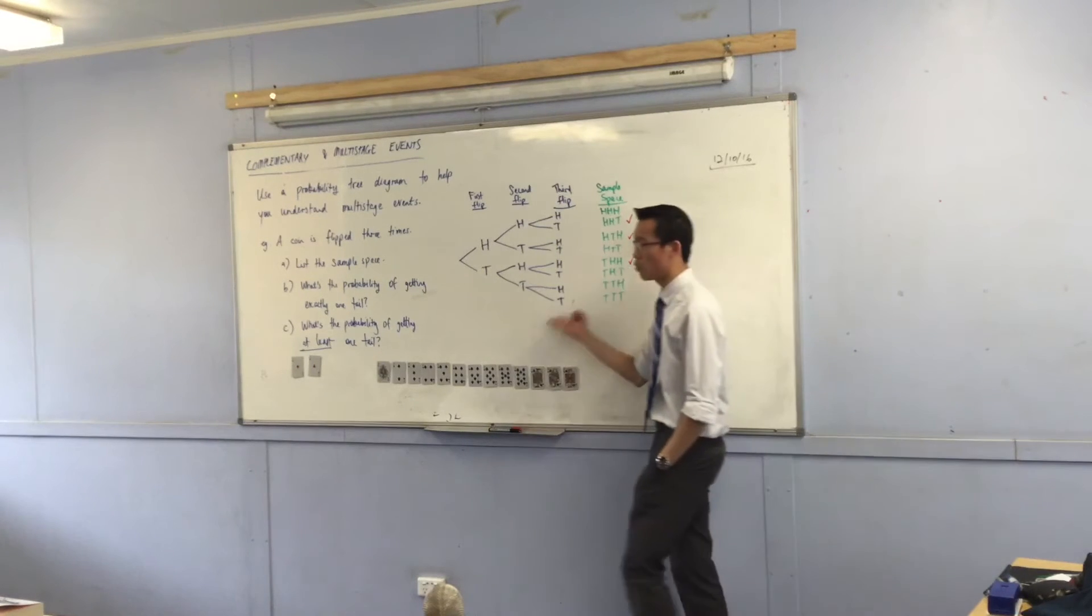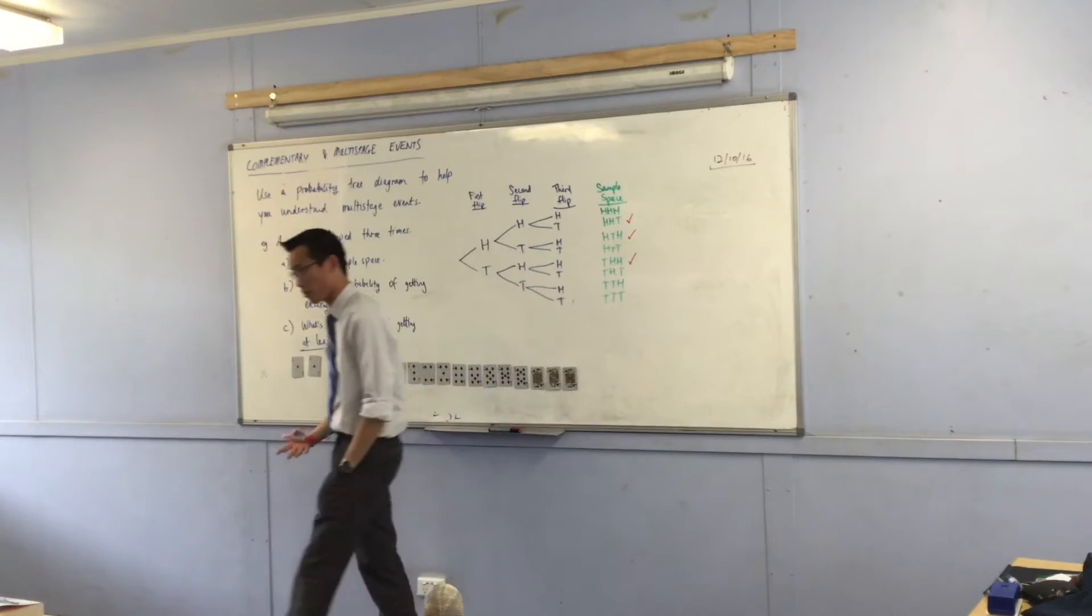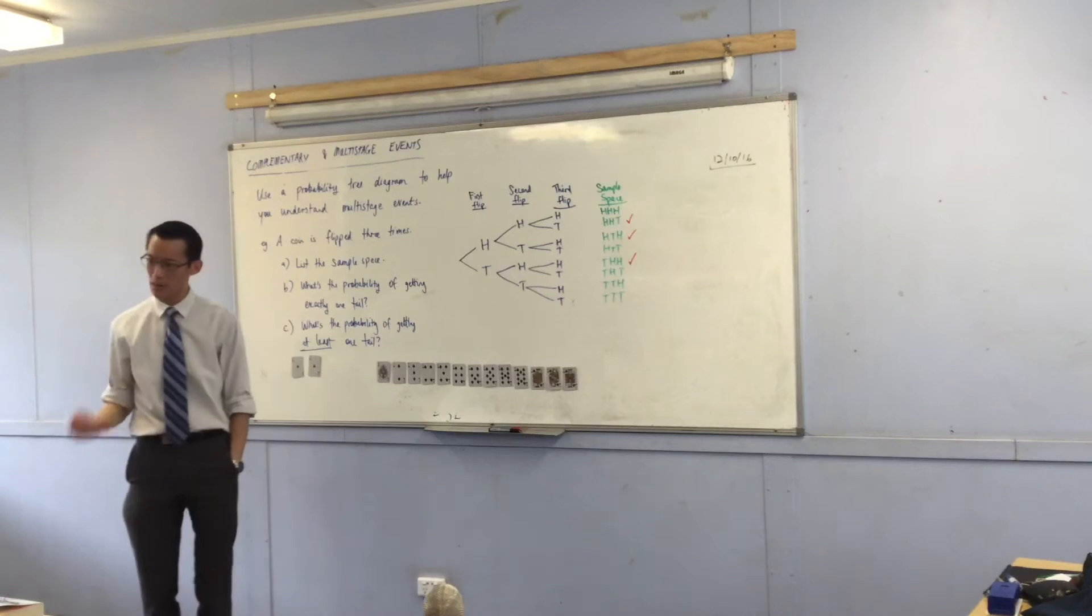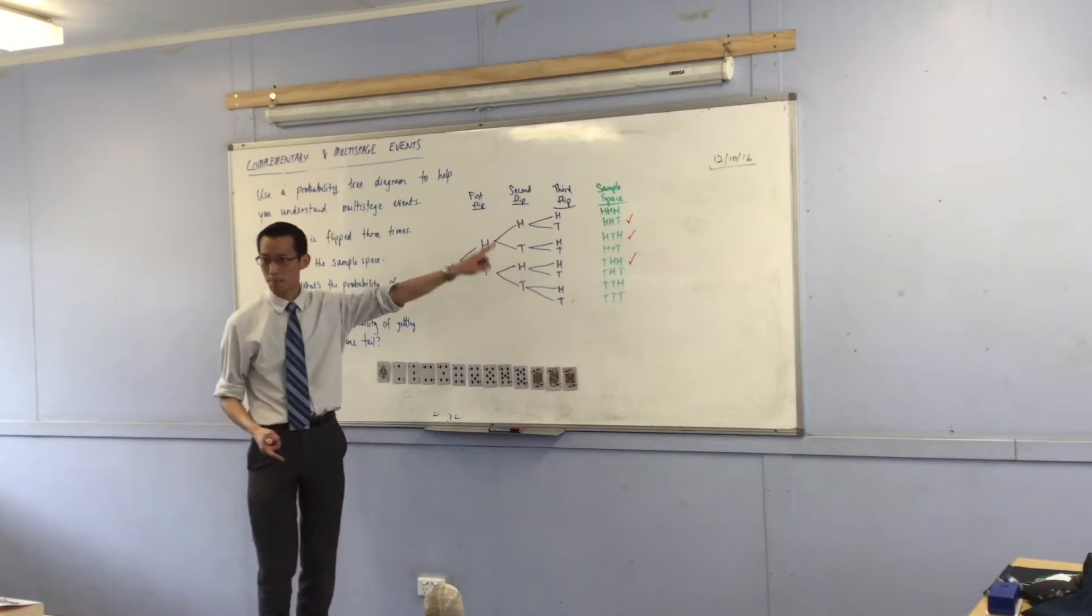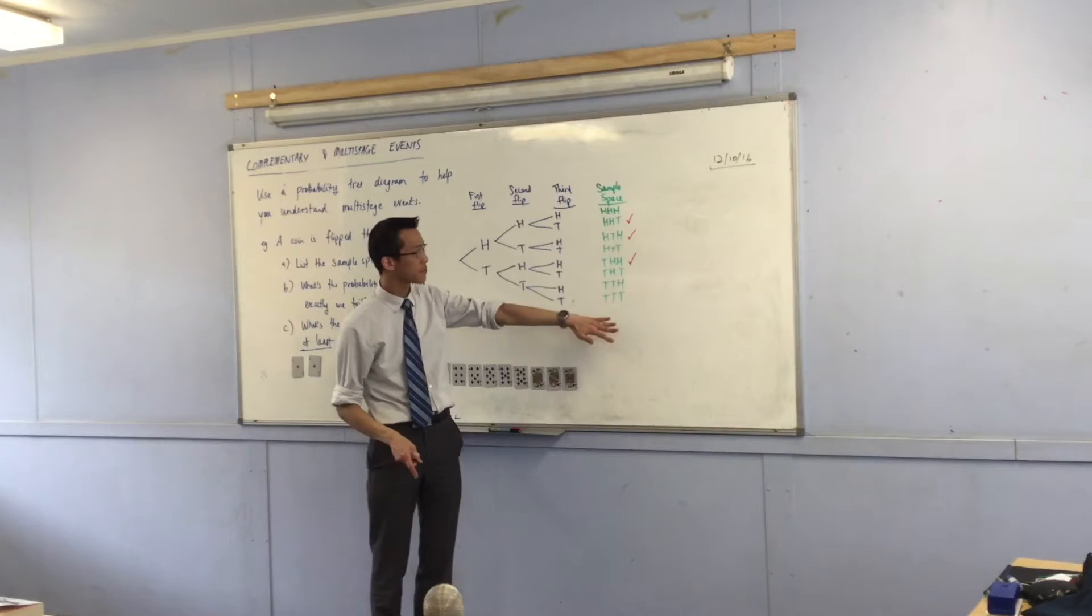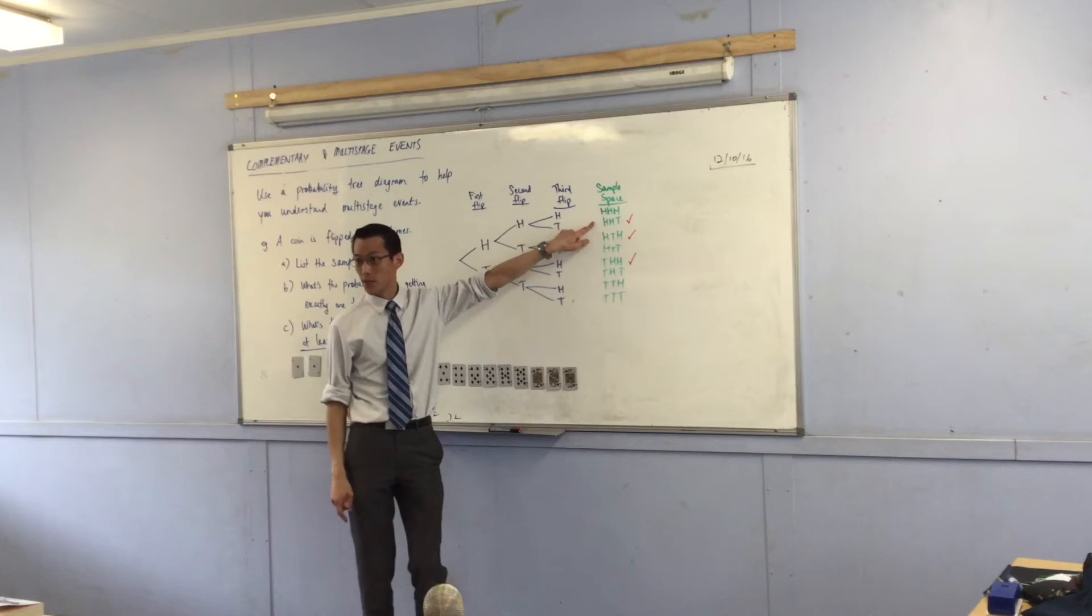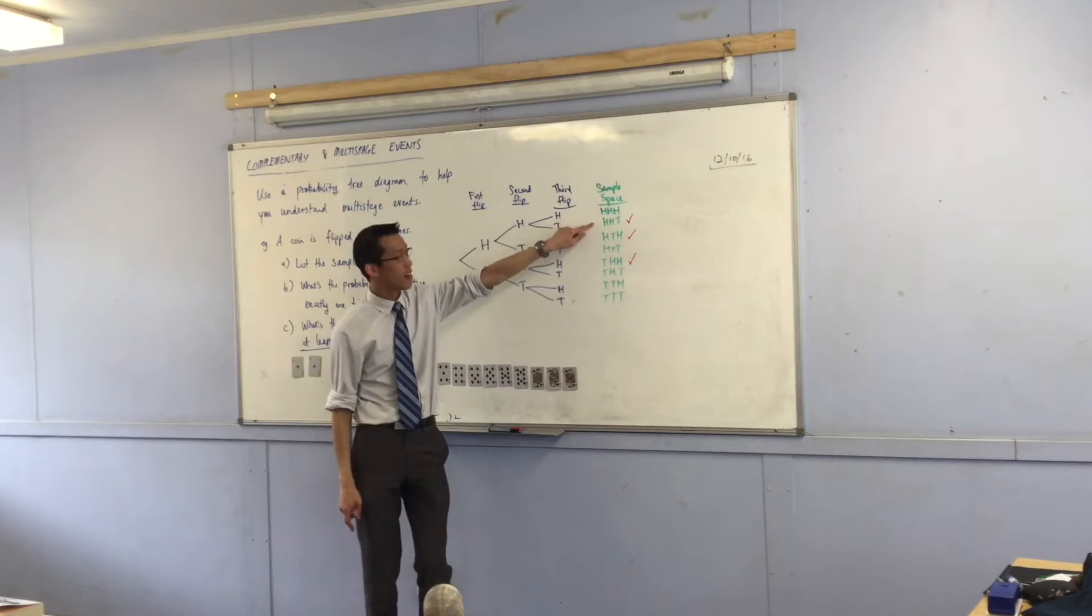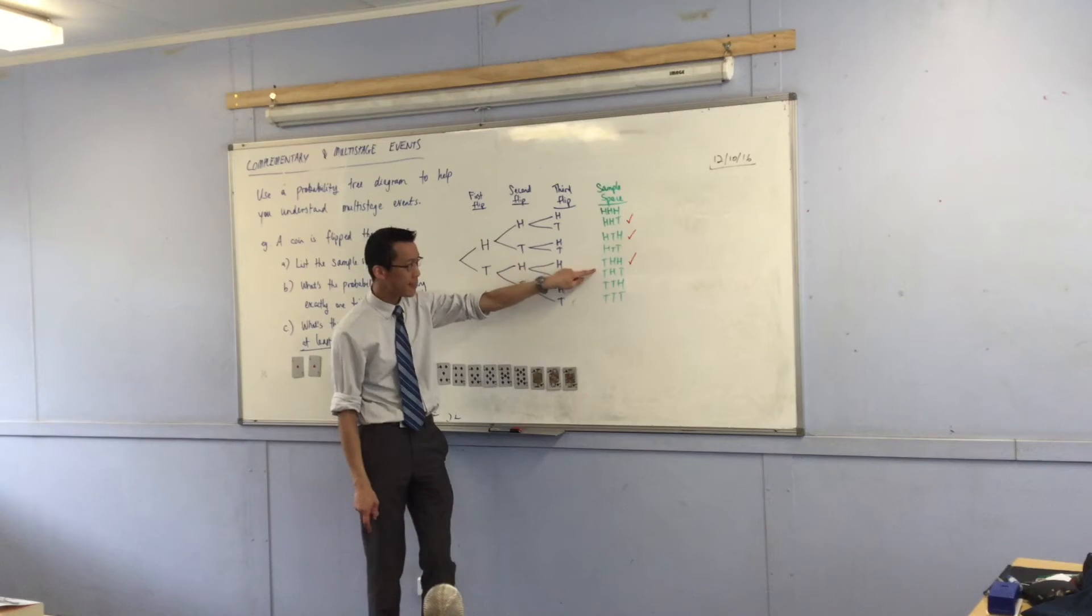Now, remember I said I haven't labelled any of these branches, because they all have the same chance. Now, if they all have the same chance, and there are eight at the side, this is how many there are, then this should be, individually, it should be an eighth. And this will be an eighth, and this will be an eighth. Do you agree?